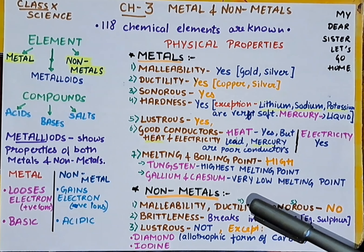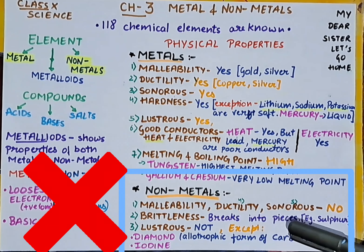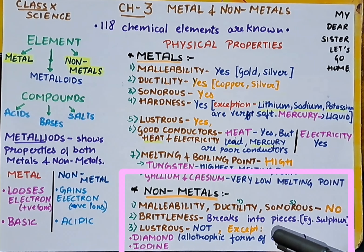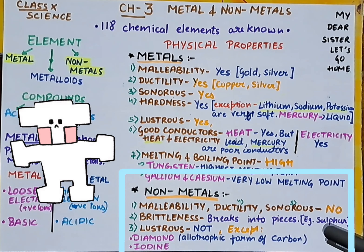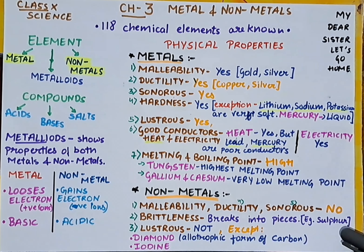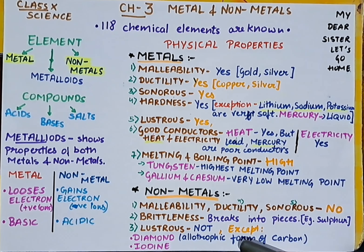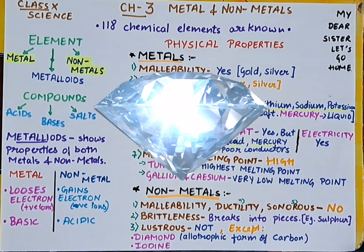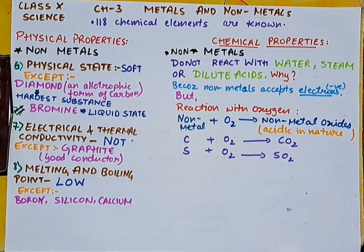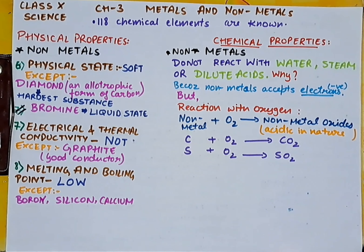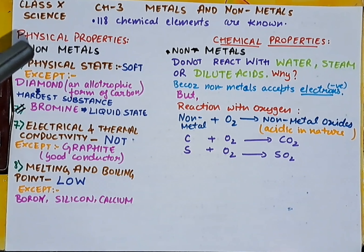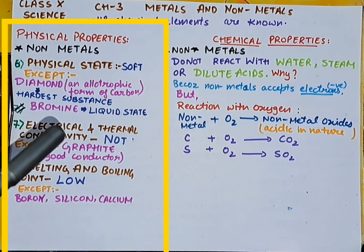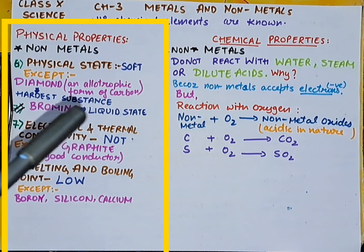Non-metals are not malleable, not ductile, and not sonorous. They are brittle — they break into pieces when hit hard; for example, sulfur, which is like a yellow chalk. Non-metals are not lustrous, except diamond and iodine. Diamond is an allotropic form of carbon and is the hardest substance known, even though it is a non-metal.